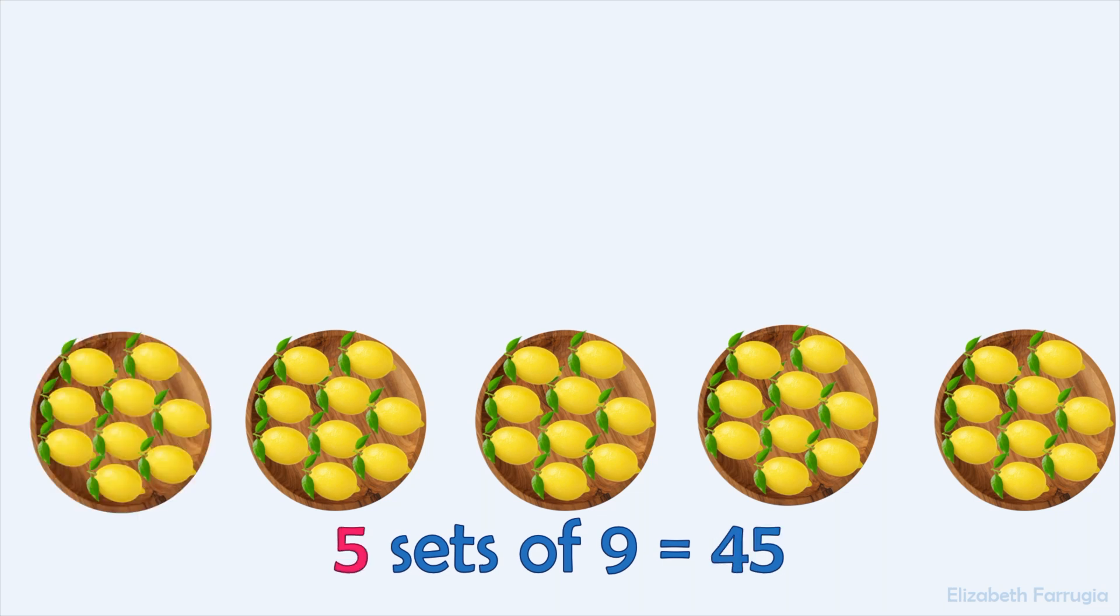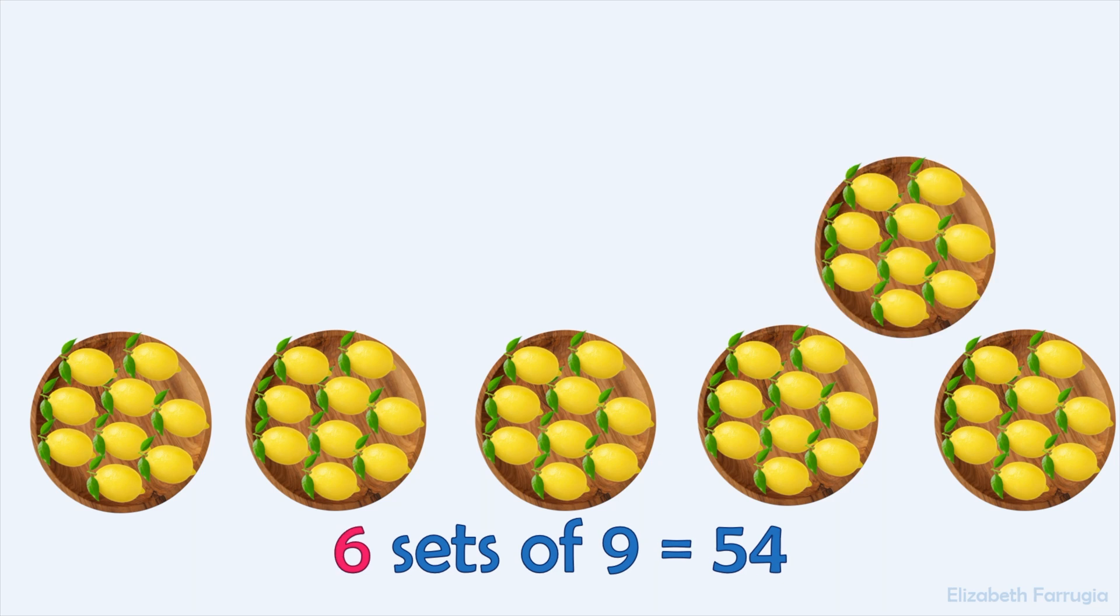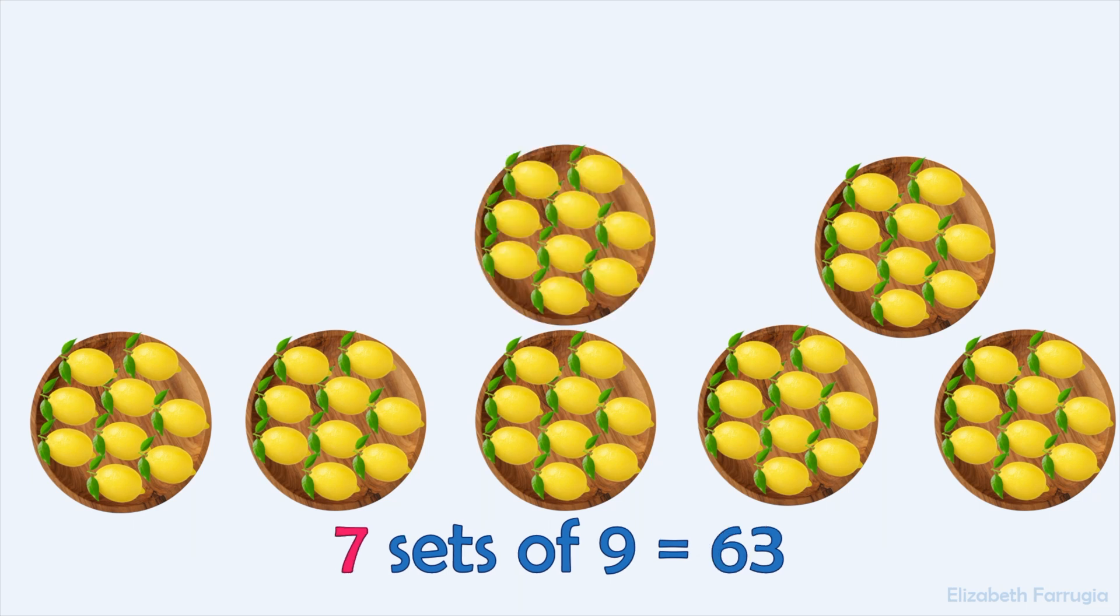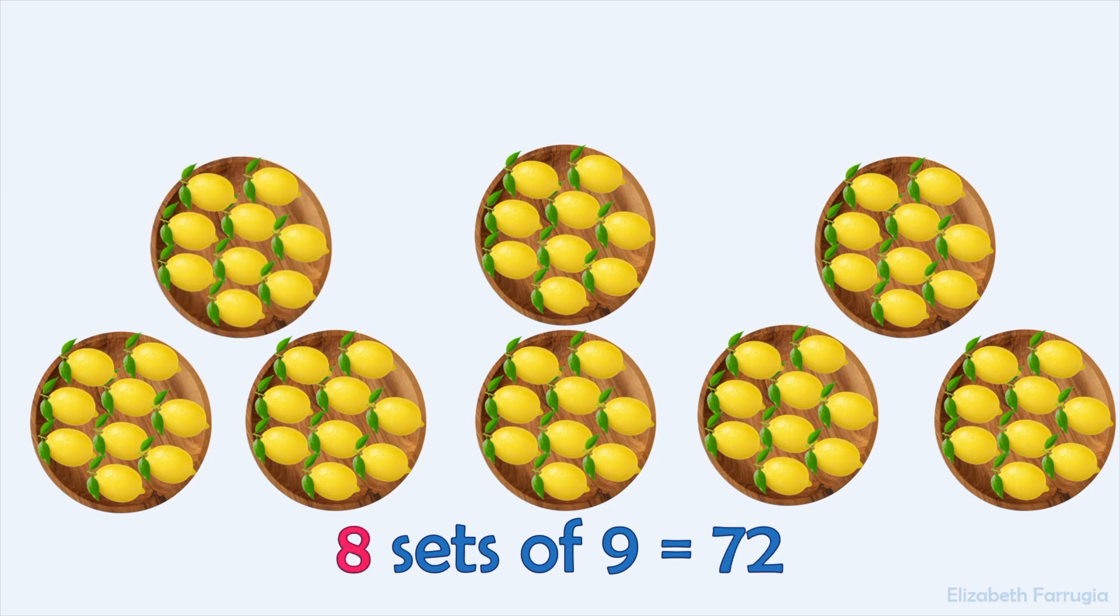5 sets of 9 make 45. 6 sets of 9 make 54. 7 sets of 9 make 63. 8 sets of 9 make 72.